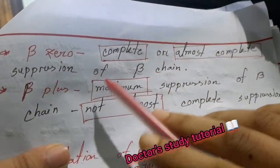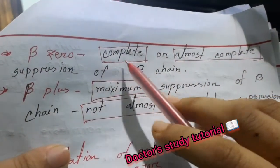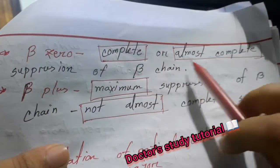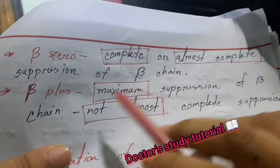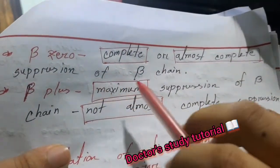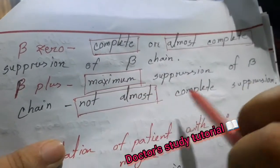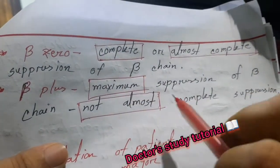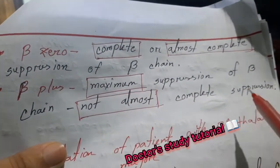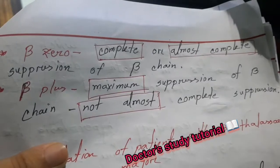Regarding beta-0 and beta-plus subtypes: Beta-0 refers to complete or almost complete suppression of beta chain synthesis. Beta-plus refers to partial — not almost complete — suppression of beta chain synthesis.